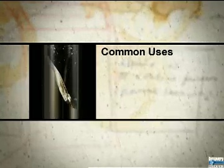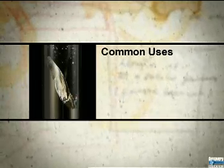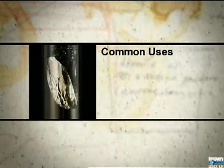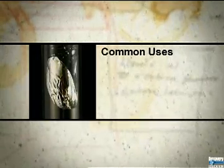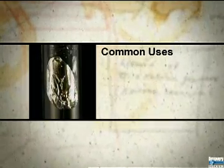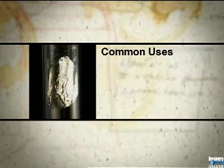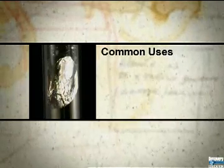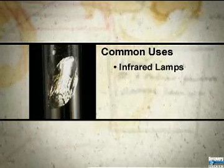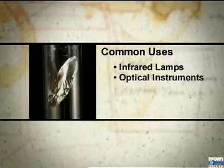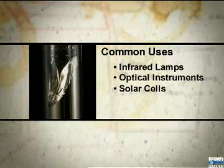Cesium is extremely reactive. It explodes when it comes into contact with cold water, and it even reacts to light rays. As a result, this element is often used in infrared lamps, optical instruments, and photoelectric cells.